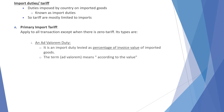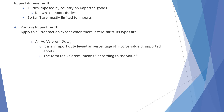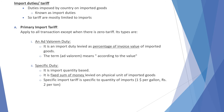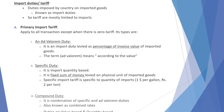The types of primary import tariff are: ad valorem duty, which is the import duty levied as a percentage of the invoice value of imported goods — the term 'ad valorem' means 'according to value.' Next is specific duty, which is an import duty where a fixed sum of money is levied on the physical unit of imported goods — for example, one dollar per gallon or Rs. 2 per ton. Next is compound duty, which is a combination of specific and ad valorem duty, also known as combined rate, where duties are both value-based and quantity-based.